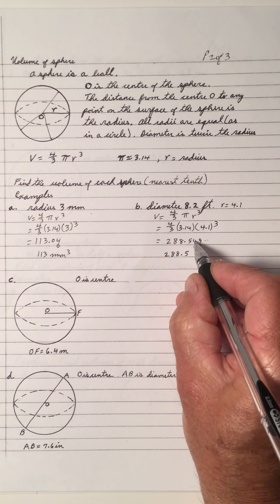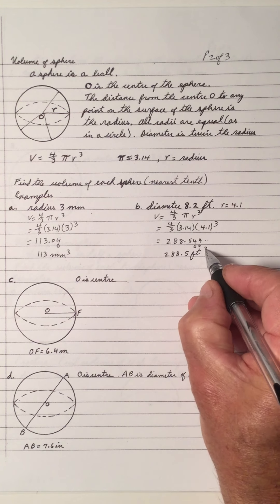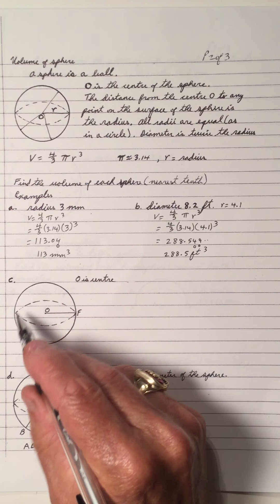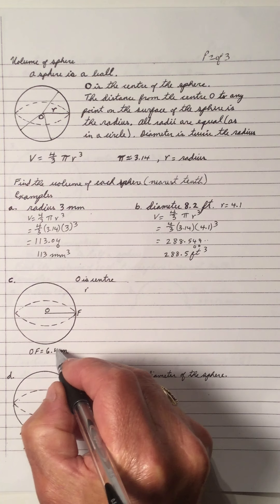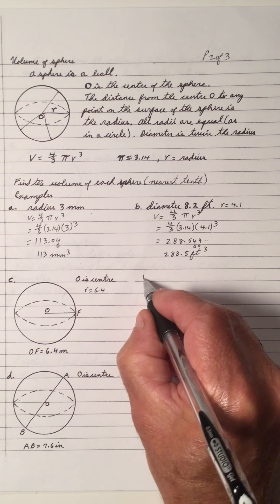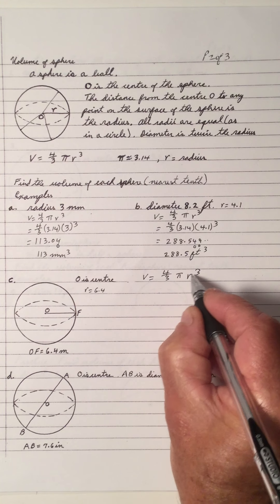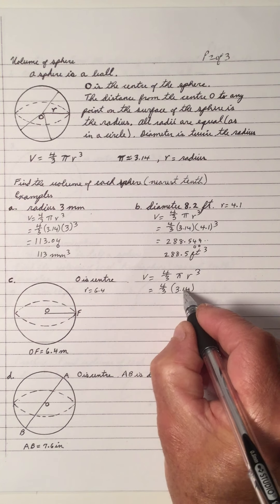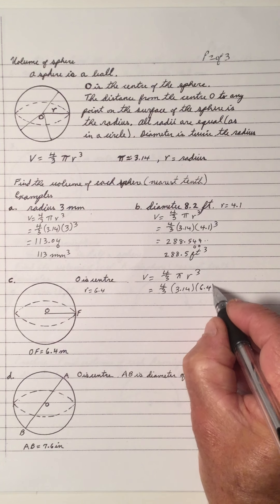The 5 won't change because 4 is less than 5, and that's feet, so that's cubic feet. For C, we have a diagram indicating it's a sphere, not just a circle, and that means the radius is 6.4 meters. So the volume is 4 over 3 pi R cubed. Memorize it — you'll need it for the future. That's 4 over 3 times pi, which is 3.14, times 6.4 cubed.